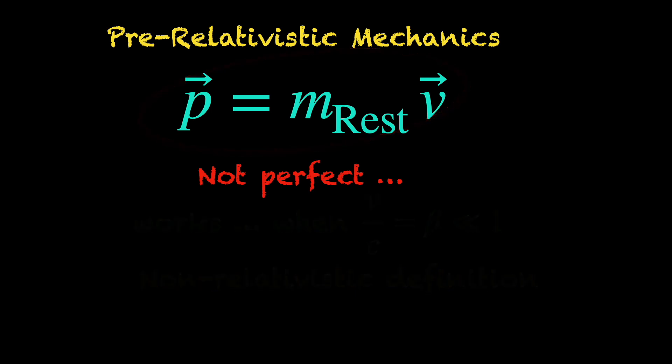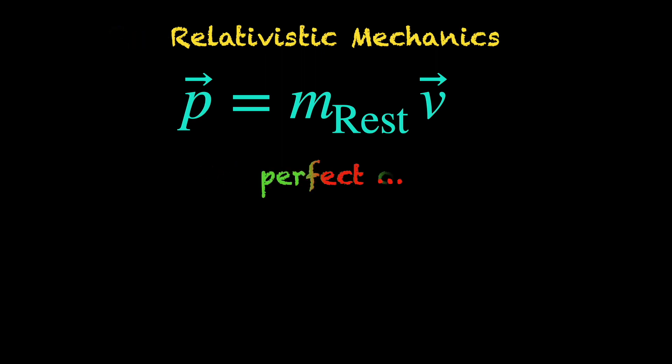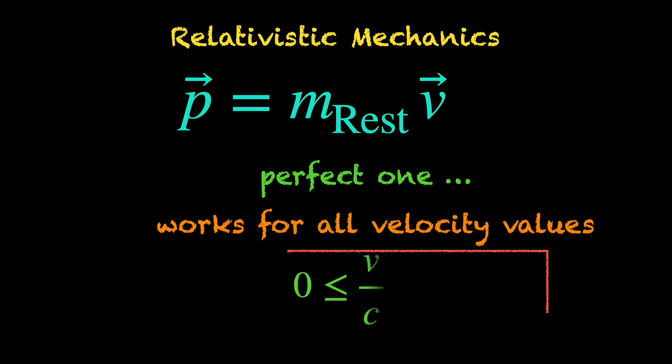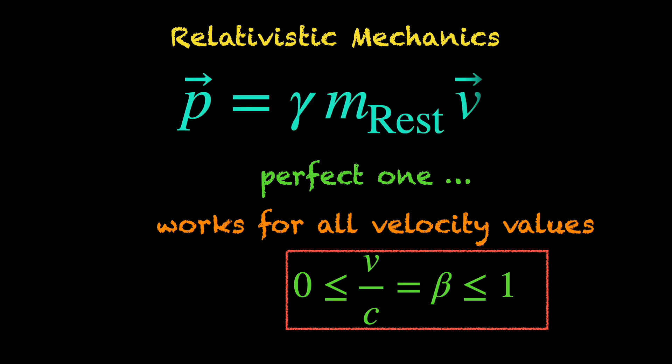So, the correct definition comes from Einstein's special relativity and works across the full range of allowed velocity values, right from a small non-zero value to all the way up to the near-light speed. It is the relativistic version of this formula, which says the momentum vector equals the Lorentz factor times the rest mass times the velocity vector.